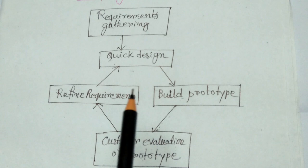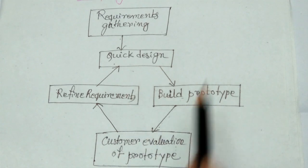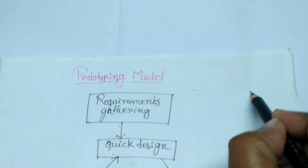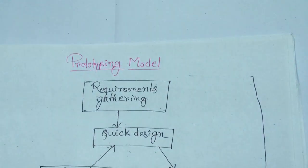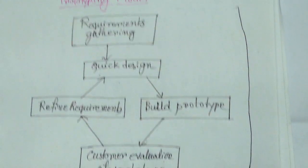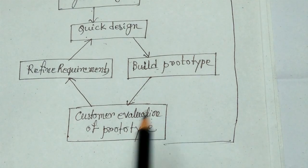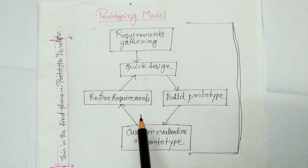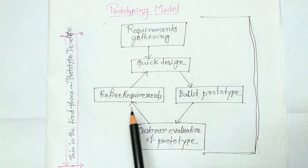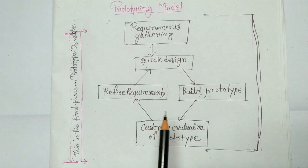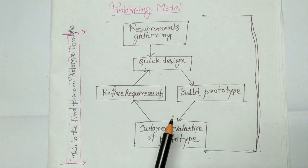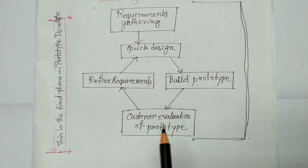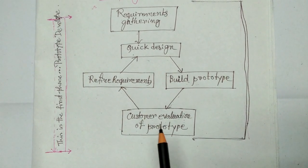As shown in the figure, the first phase is prototype development — this is the first phase. This phase can control various risks. After this phase, when the customer approves the prototype, the actual system is developed using the iterative waterfall model.